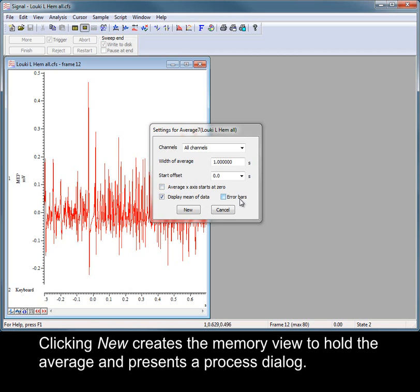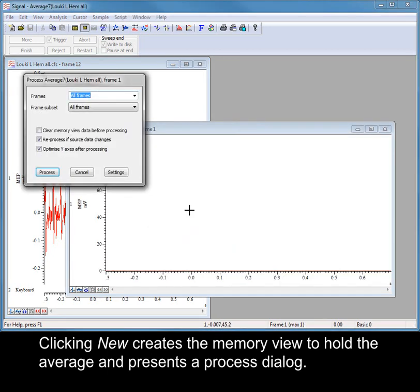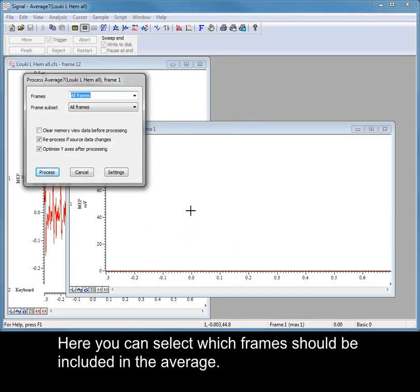Clicking New creates the memory view to hold the average and presents a process dialog. Here, you can select which frames should be included in the average.